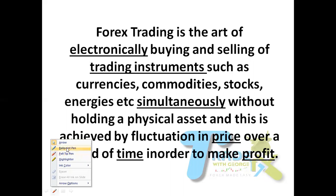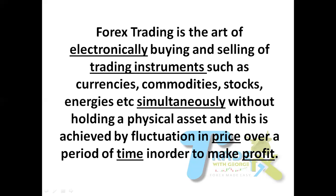Forex trading is done electronically — it is buying and selling, that is why it is called trading. What do you actually buy and sell? You buy and sell assets, and here they are called trading instruments. Examples of such trading instruments are currencies, commodities, energies. As we go down the class, we are going to see examples of these trading instruments which you are trading.